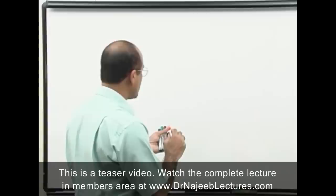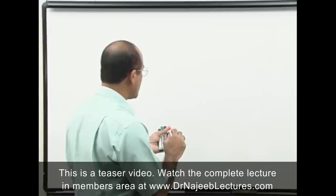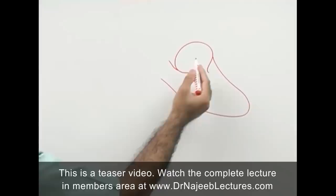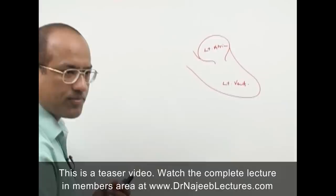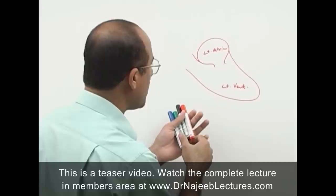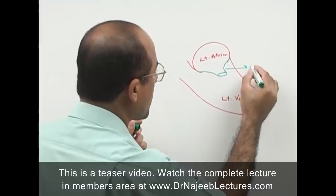First of all, I will draw the left side of the heart. This is the left atrium. Blood from the left atrium goes to the left ventricle, and blood from the left atrium to the left ventricle passes through the mitral valve.